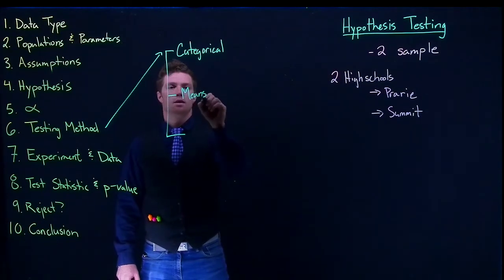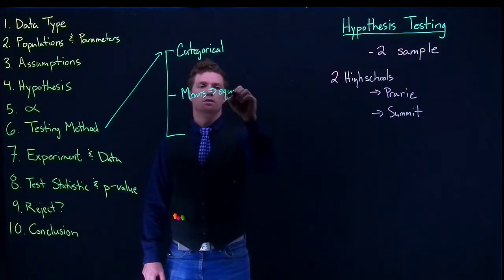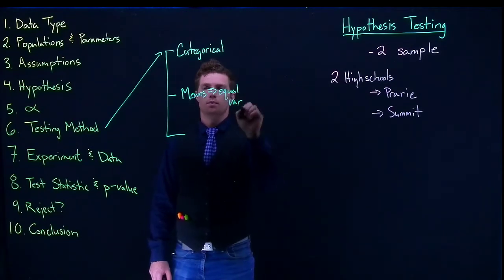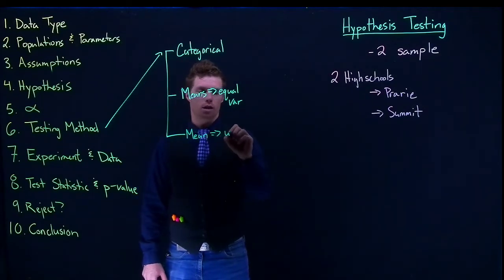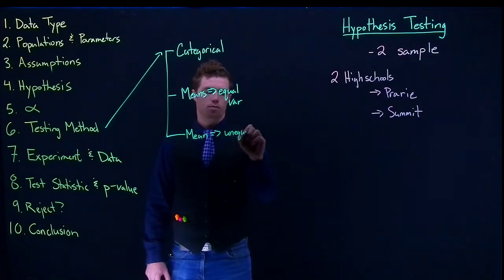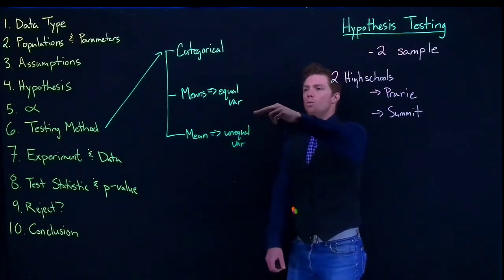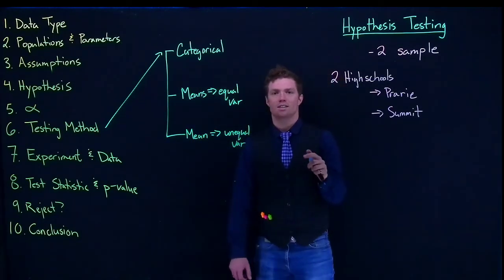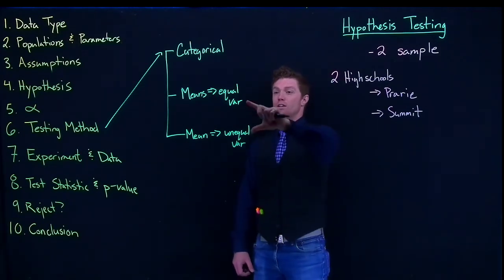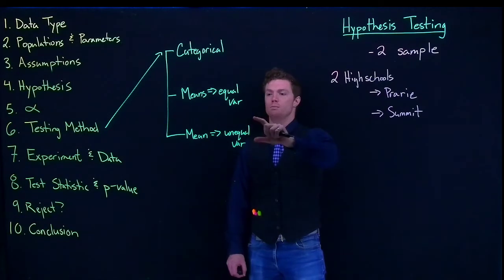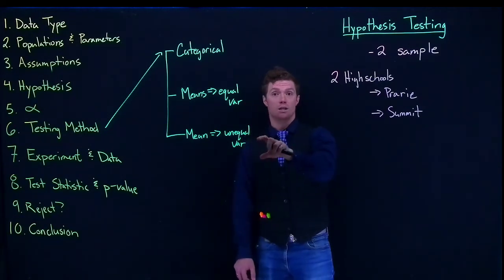We've got one that is with equal variance, and we've got one means where we're doing it with unequal variance. The reason why this is important is because of how we calculate the effective standard error. There's a different methodology based upon if we can assume that the means have equal variance versus if they have unequal variance.